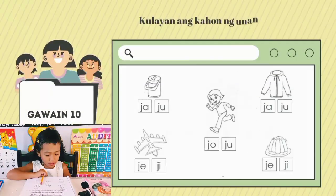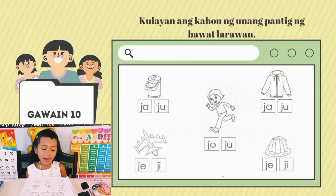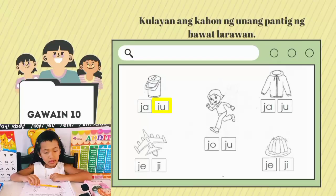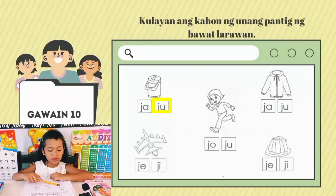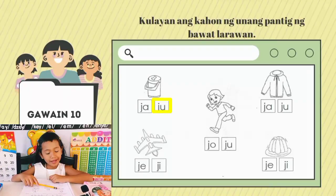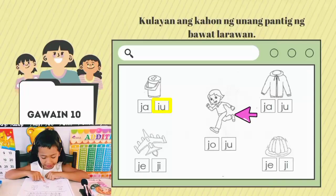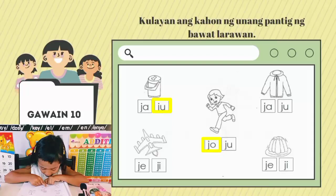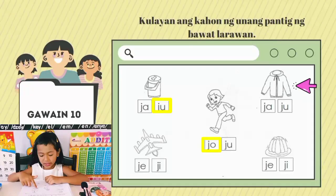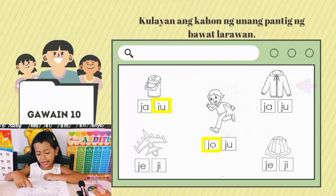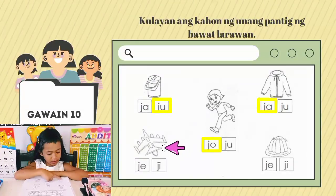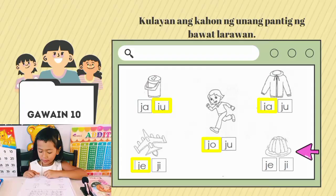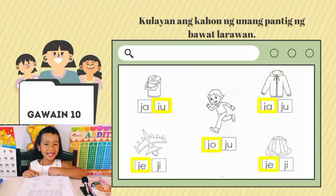Kukulayan ang kahon ng unang pantig ng bawat larawan. Ang unang larawan ay jug — meron ditong jug at ju. Ang kulayin ko ay ju, dahil ang jug ay salitang Ingles na ang pantig ay J-U. Sunod na larawan ay jog — meron ditong J-O at J-U; ang sagot natin ay J-O. Sunod ay jacket — meron J-A at J-U; ang kukulayin natin ay ja. Sunod ay jet — meron J at G; ang sagot natin ay J. At ang huling larawan ay jelly — ang kukulayin ay J. Tara, kulayin na natin ang kahon na ating tamang sagot.